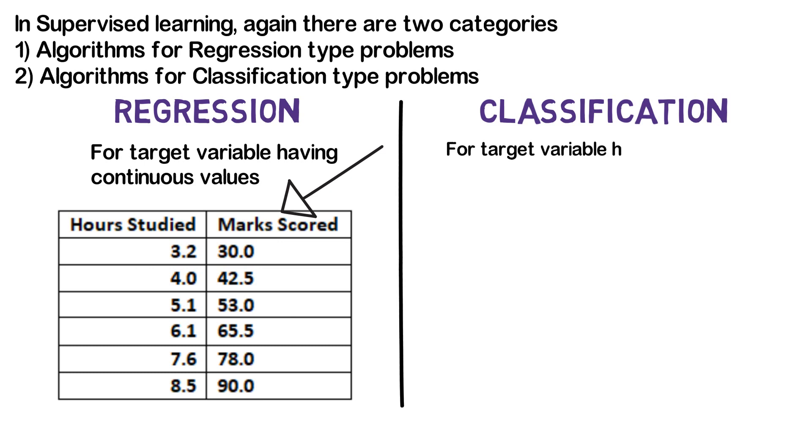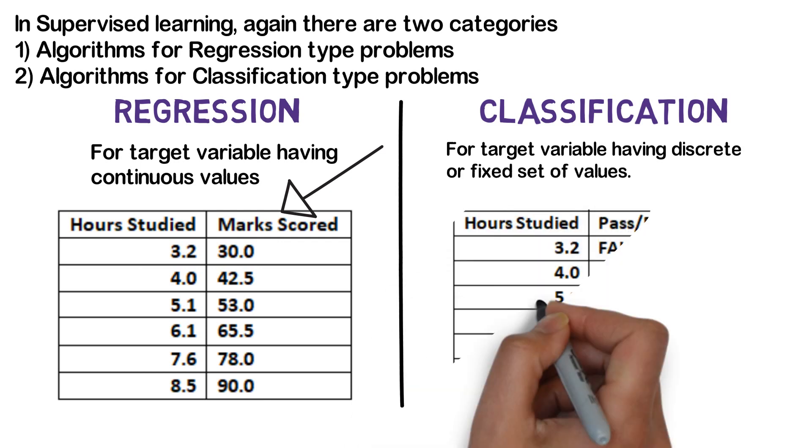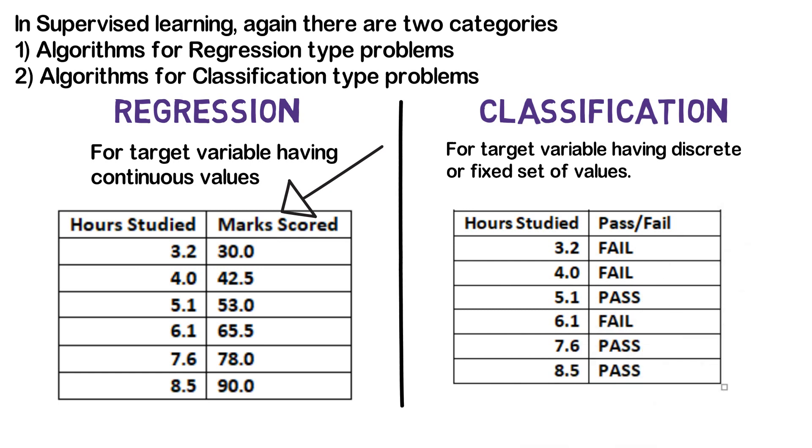When the target variables have discrete or fixed set of values, we can use classification type algorithms. For example, if we have the data of hours studied and passed in exam or not, the target variable passed in exam or not has only two values: pass or fail. Thus we can use classification type algorithms.